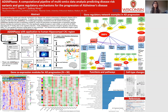Here, we demonstrated an application of AD-SNP-Pheno to the hippocampal CA1 region for 31 human brain samples — 7 control, and 24 in various AD stages such as initial, moderate, and the severe stage.